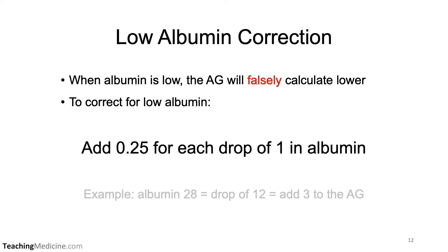To correct for a low albumin, we should add 0.25 for every drop of 1 that we measure in the albumin. For example, an albumin of 28 represents a drop of 12, and therefore we would add 3 to the anion gap.